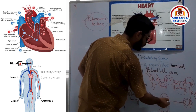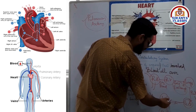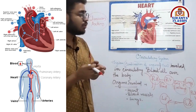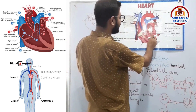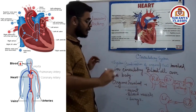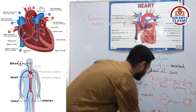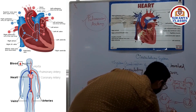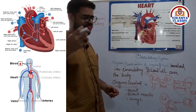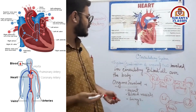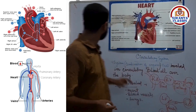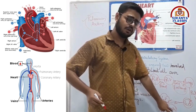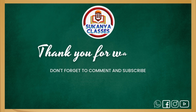This pure oxygenated blood leaves the lungs and comes directly into the left atrium via the pulmonary vein. Then it moves from the left atrium to the left ventricle, and from the left ventricle it is pumped to all over the body via the aorta. So remember three key vessels: pulmonary artery, pulmonary vein, and aorta.